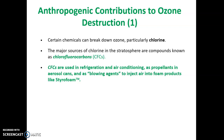Chlorine came originally from substances called chlorofluorocarbons. These molecules contained chlorine atoms, fluorine atoms, and carbon atoms. Chlorofluorocarbons — abbreviated CFCs — had been used in refrigeration and air conditioning, as propellants in spray cans, and as blowing agents to create foam products like styrofoam.